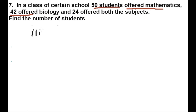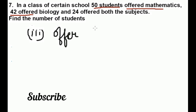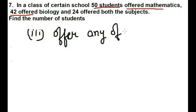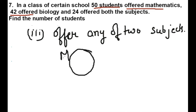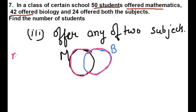The next question is: offering any of the two subjects, which means at least one subject. At least one subject means the union. This is mathematics set M and this is biology set B. At least one means minimum one — you can take two or you can take at least one. So we need to find the number of students in M union B.